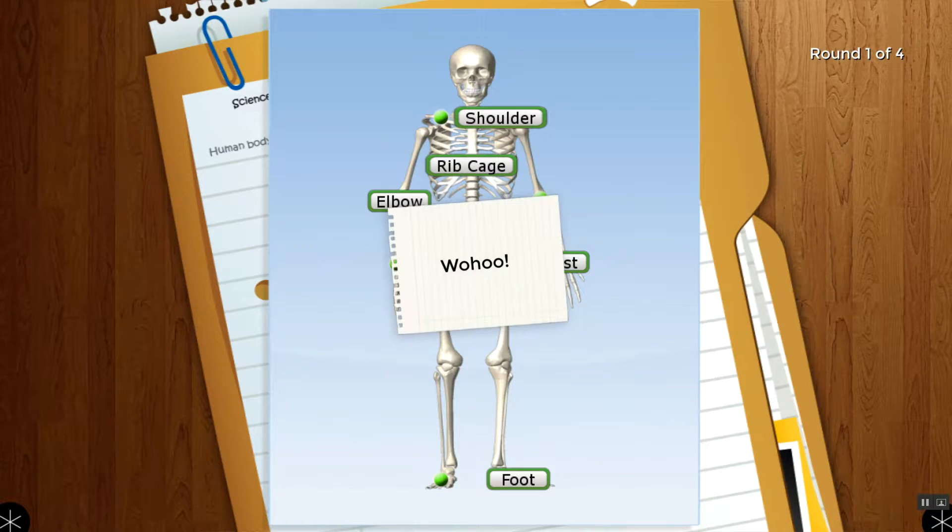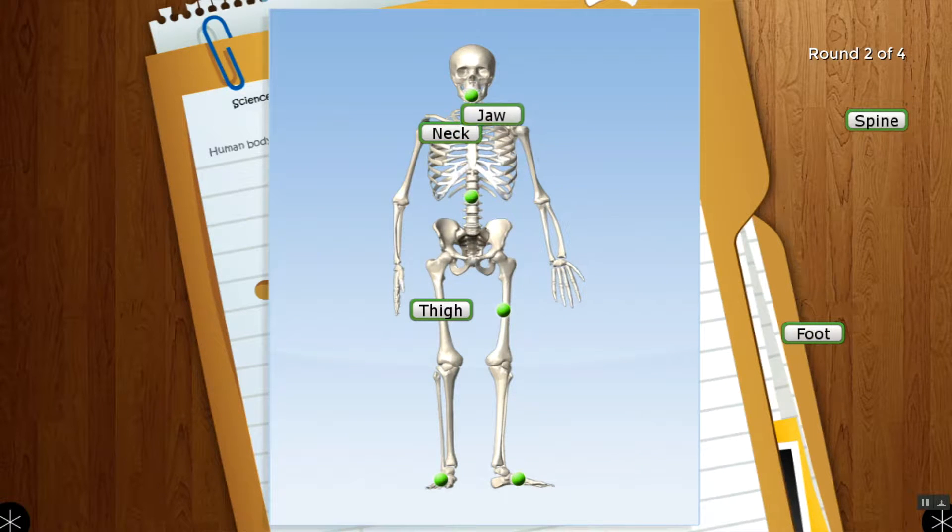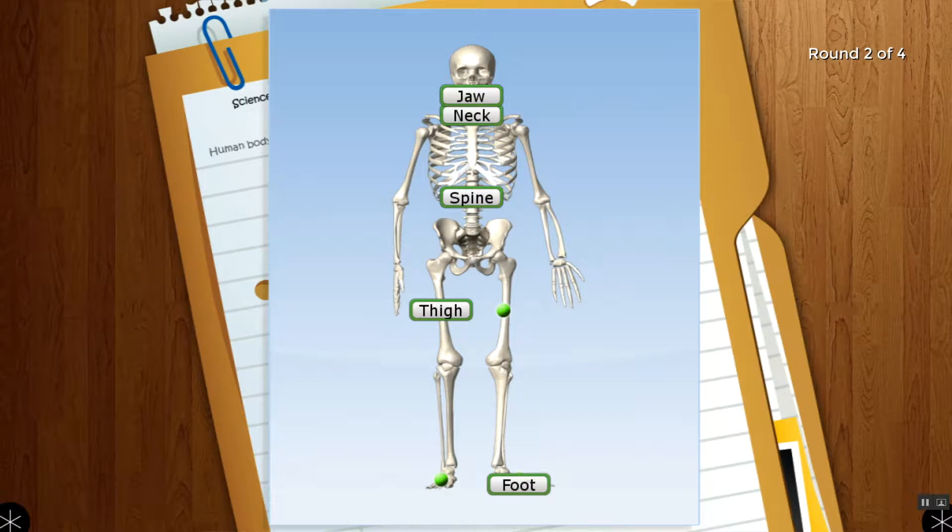Students drag labels to set them in the correct locations on a skeleton. After all labels are placed, incorrectly placed labels will give off a red flashing glow, allowing for self-correction. Feedback is provided after all the labels are correctly placed.